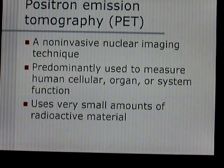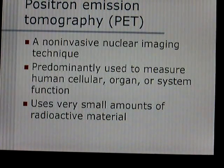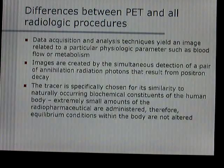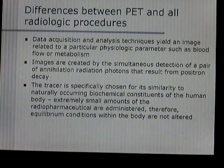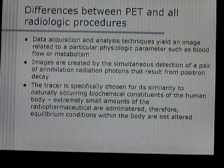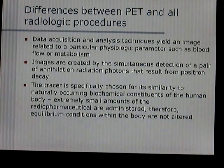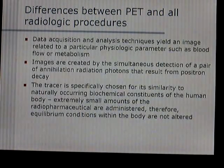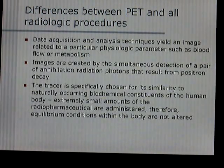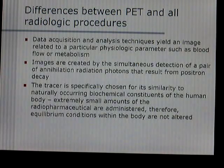PET scans — positron emission tomography — is a non-invasive nuclear imaging technique used to measure human cellular, organ, or system function using small doses of radioactivity. PET uses data acquisition and analysis techniques to yield an image related to a particular physiologic parameter, such as blood flow or metabolism. Images are created by the simultaneous detection of a pair of annihilation radiation photons that result from positron decay, and those photons travel 180 degrees from each other.